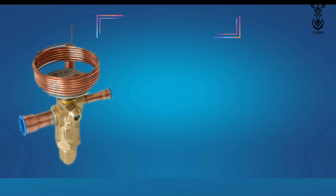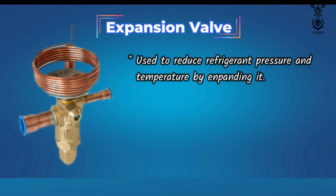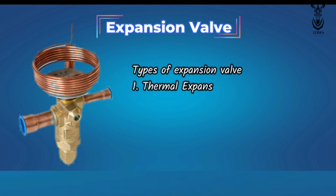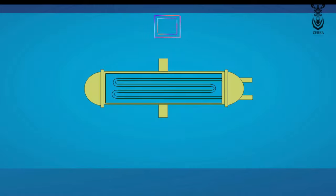Next, the expansion valve. Its function is a simple one — it reduces the pressure and temperature of the refrigerant by expanding the refrigerant coming from the condenser at high pressure. There are four types of expansion valves: thermal expansion valve, pilot-operated thermal expansion valve, electronic expansion valve, and fixed orifice expansion valve.